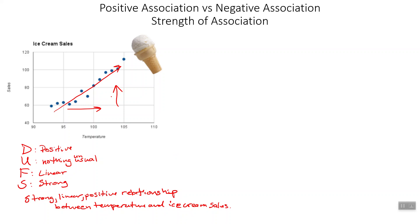Do we think it being hot outside causes people to buy more ice cream, or is there another variable lurking in the background? Probably another variable — if it's hotter out, it's more likely to be sunny, you're more likely to be outside, and if you're outside you're more likely to see the ice cream man and buy ice cream — or more likely to go to the grocery store.